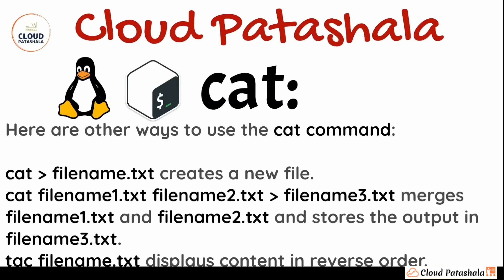Other ways to use cat: you can create a file using cat with a redirect arrow — cat > filename.txt. You can also merge files: cat filename1 filename2 > filename3 would combine the content of file1 and file2 and store the output in file3. Additionally, tac — which is cat spelled backwards — displays the content in reverse order.